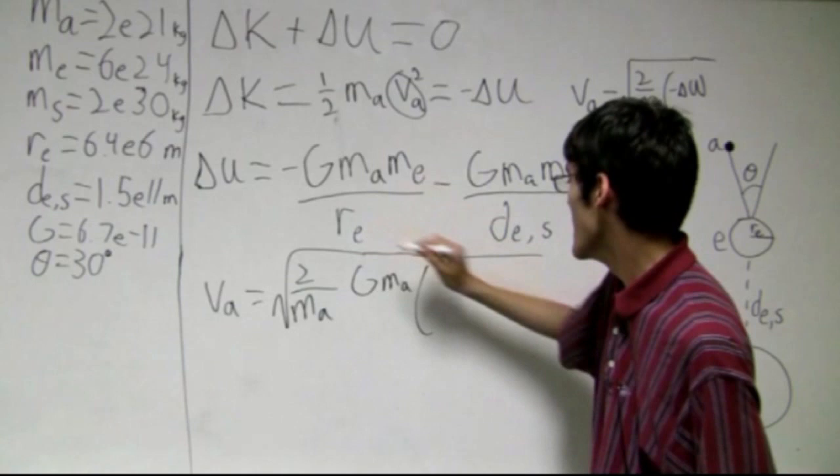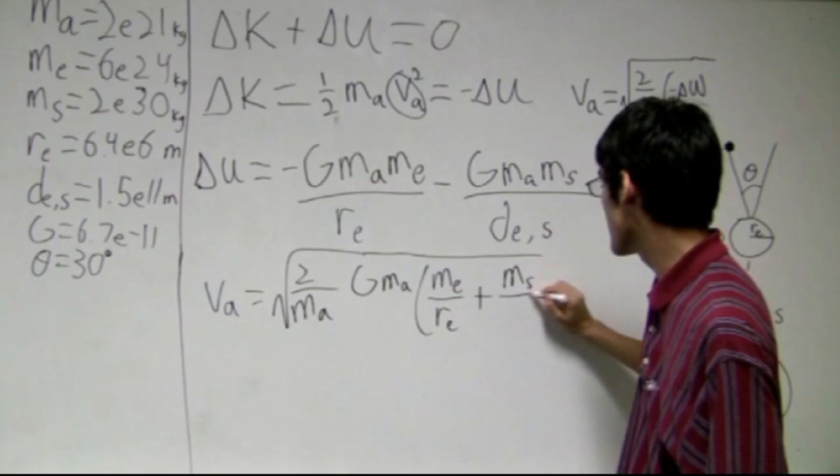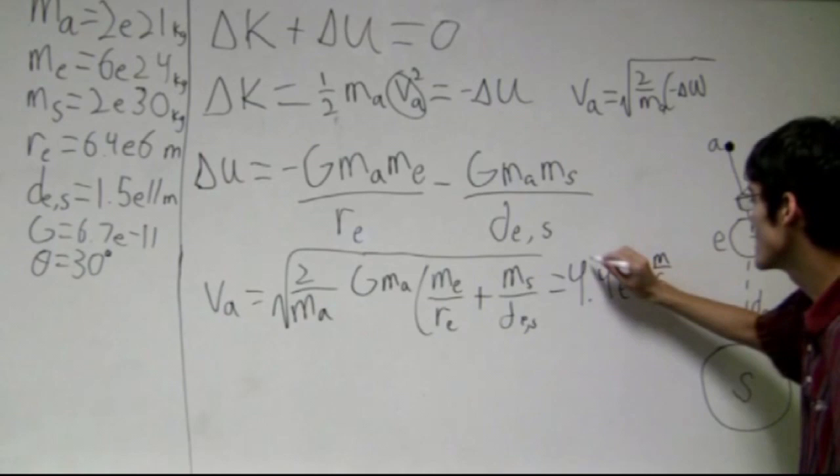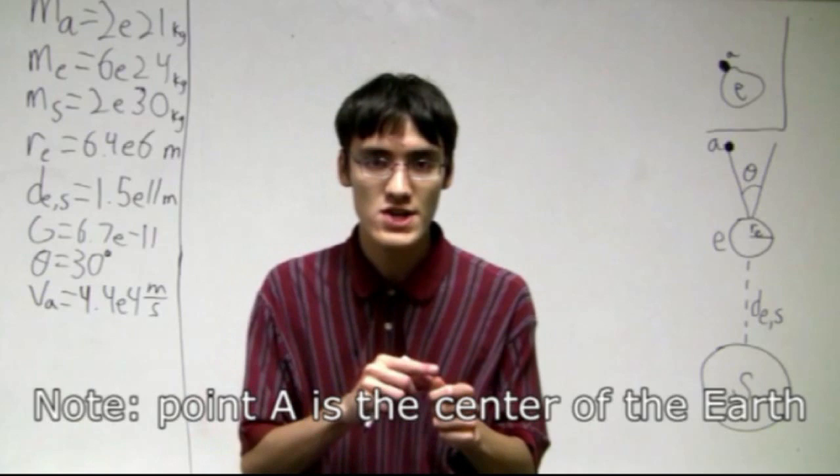The negatives cancel out. And we are left with mE over rE, mass of the Earth over the radius of the Earth, plus mass of the Sun over the distance between the Earth and the Sun. And we know all those values, so I can tell you that this is going to end up being 4.4×10^4 meters per second.